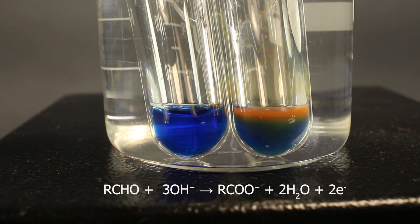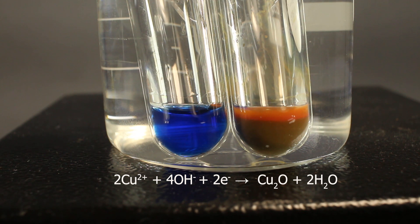Aldehyde, here is generic aldehyde, is oxidized into carboxylate ion, losing two electrons. These electrons are going to oxidizing agent, which is copper 2, here.